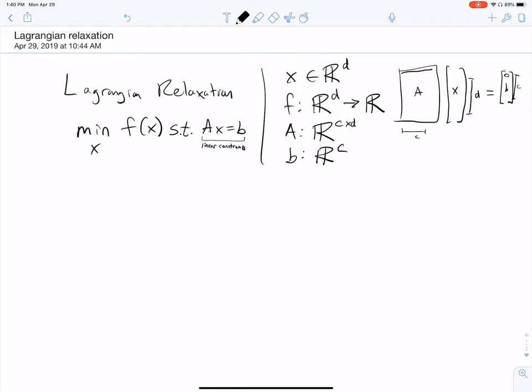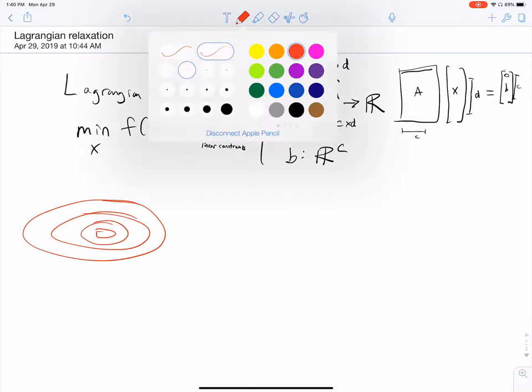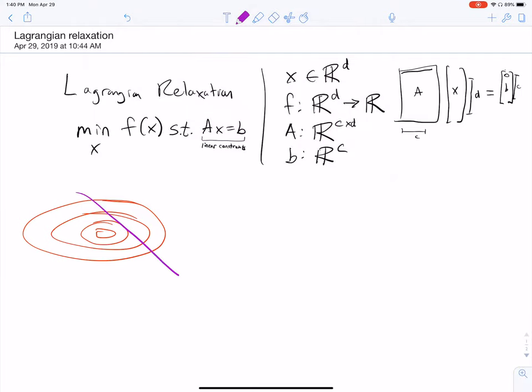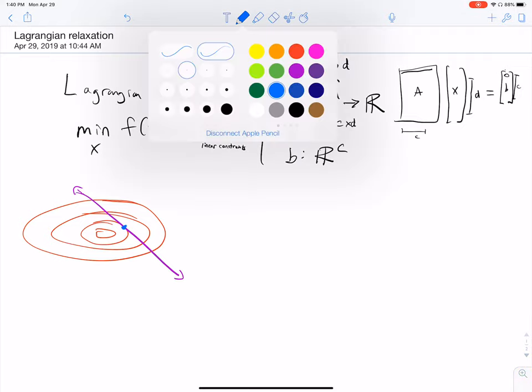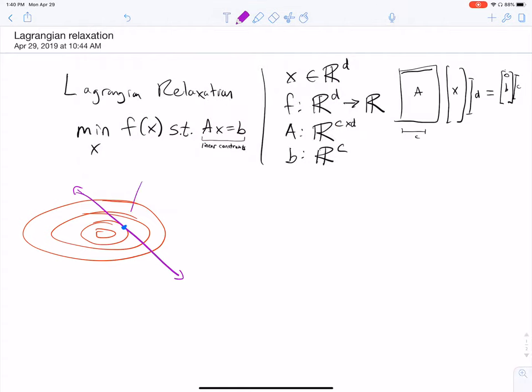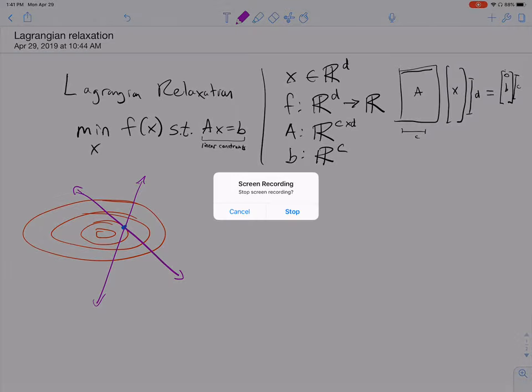In two dimensions, you might have an objective function that looks like this, and we would have a constraint that's a linear constraint. We're looking for a point on this line that minimizes the objective value. In two dimensions, if you have a linear constraint, you're just down to a line. If you actually have two constraints, you would basically pinpoint exactly where you can be. You can think of each constraint as essentially reducing the subspace of possible solutions by one dimension.